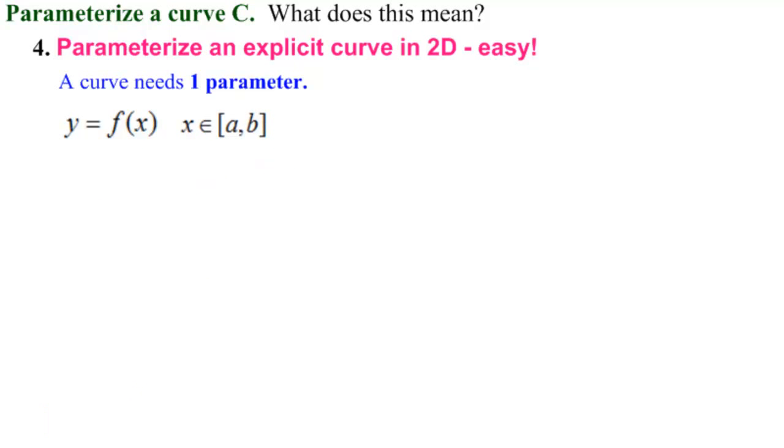What's the rule to parameterize it? We simply let X equal T. That's the rule. What do we get with that?